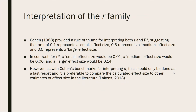Cohen in 1988 provided a rule of thumb for interpreting both R and R squared, suggesting that an R of 0.1 represents a small effect size, 0.3 a medium effect size, and 0.5 a large effect size. For eta squared and omega squared, a small effect size is 0.01, a medium effect size is 0.06, and a large effect size is 0.14. However, as with Cohen's benchmarks for interpreting D — covered in part 1 of this tutorial series — this should only be done as a last resort, and it is preferable to compare the calculated effect size to other estimates in the relevant literature.